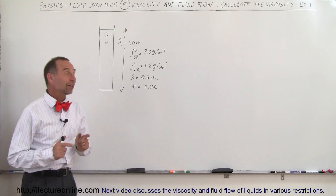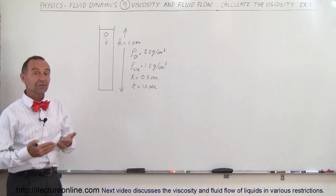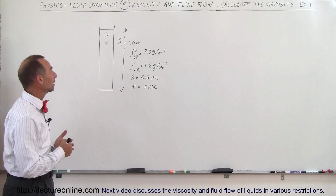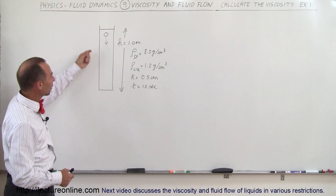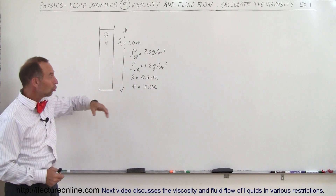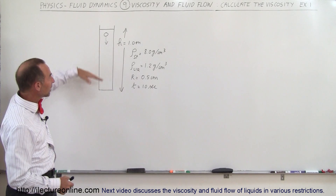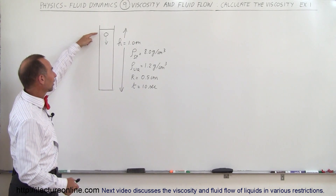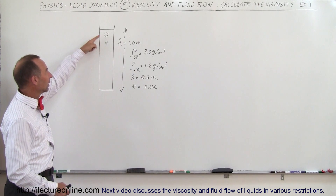Welcome to ElectronLine. Now let's do an example of how to calculate the viscosity in a simple experiment like this. Let's say we have some viscous liquid we put in a long tube. The length of the tube is one meter — at least the distance that the sphere has to fall through the liquid.